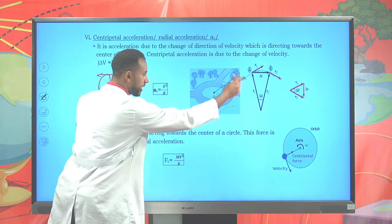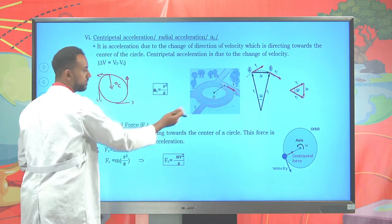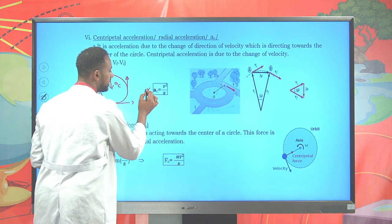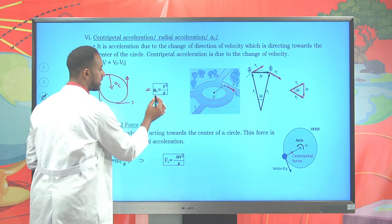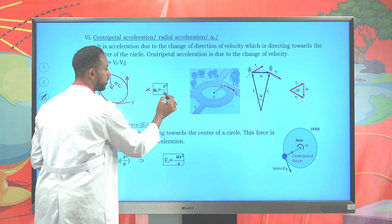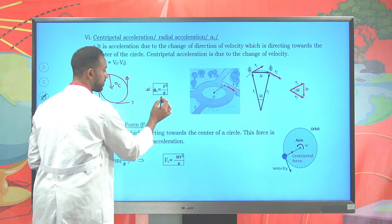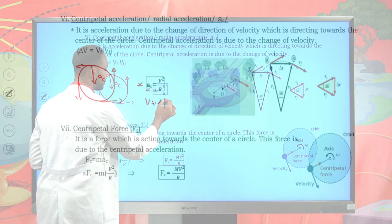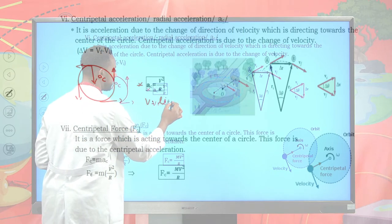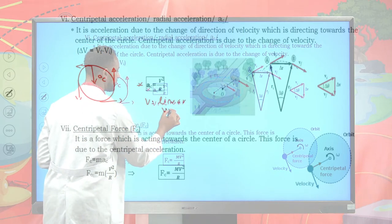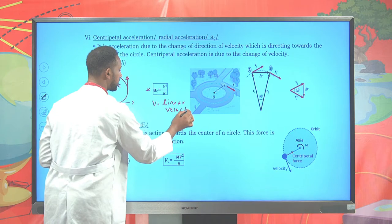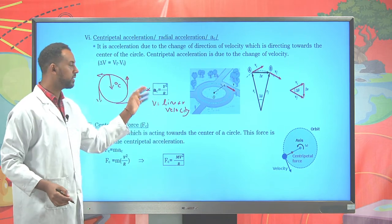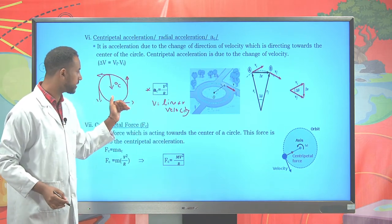From similarity of triangles (which can be found in different references), we can derive the expression for centripetal acceleration as v²/r, where v is the tangential or linear velocity and r is the radius. So linear velocity squared over radius gives centripetal acceleration.